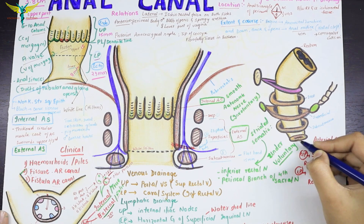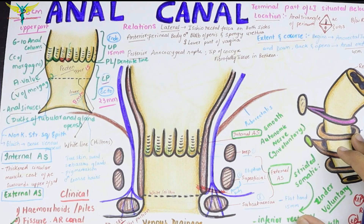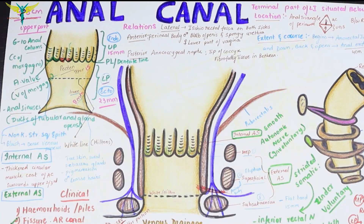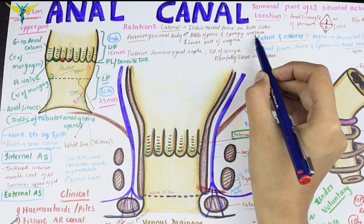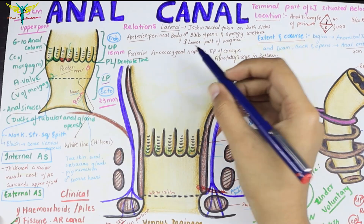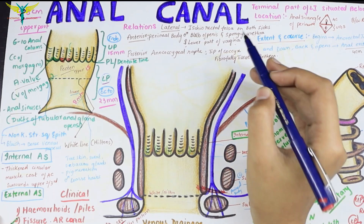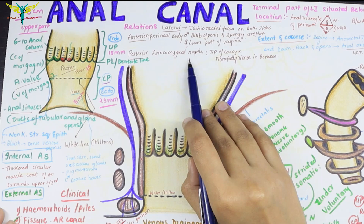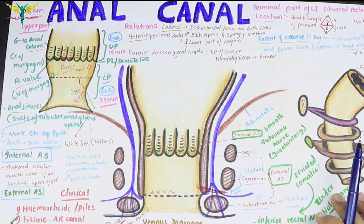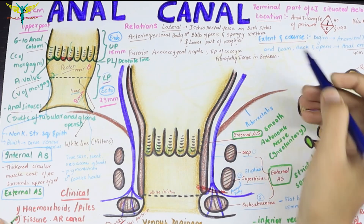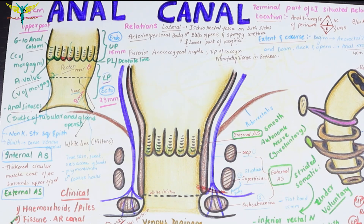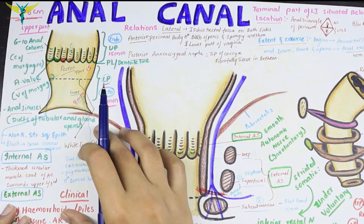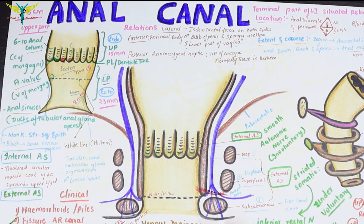The anal orifice is about 4 centimeters. Regarding the relations of the anal canal: the anterior relation is the perineal body, and in males the bulb of the penis and spongy urethra, while in females the lower part of the vagina lies anteriorly. The posterior relation is the anococcygeal raphe, the tip of the coccyx, and fibro-fatty tissue between them. The lateral relation is the ischiorectal fossa on both sides.